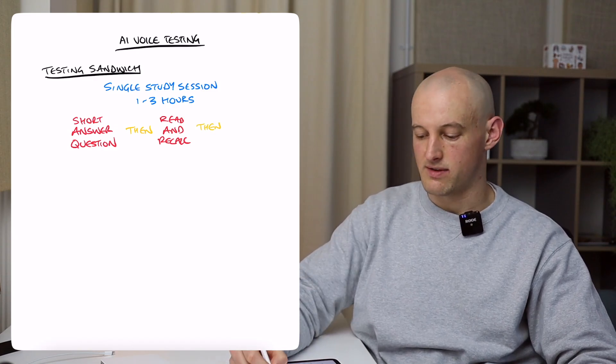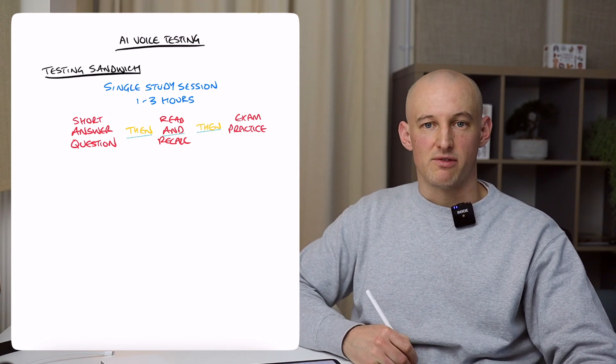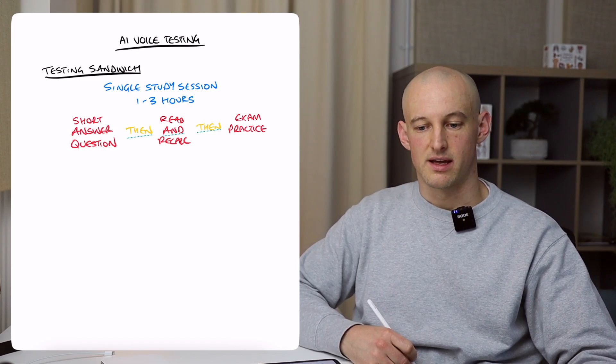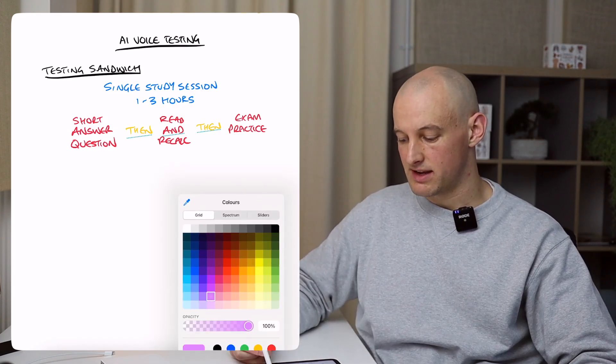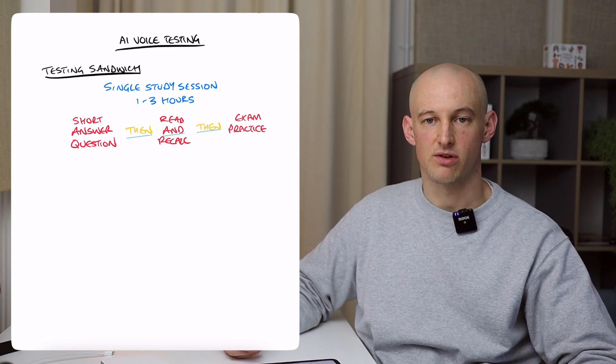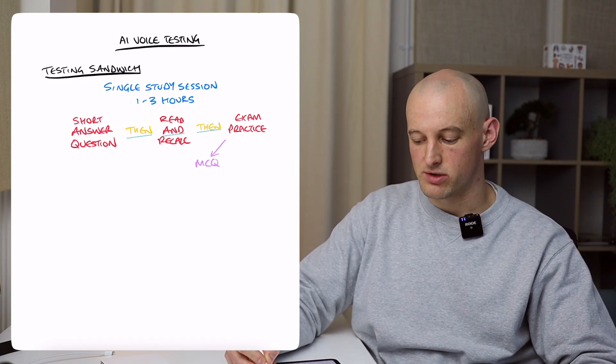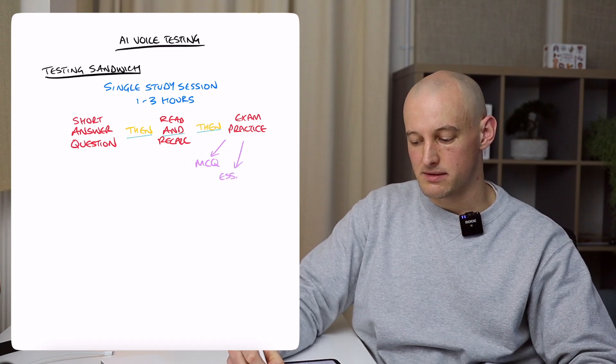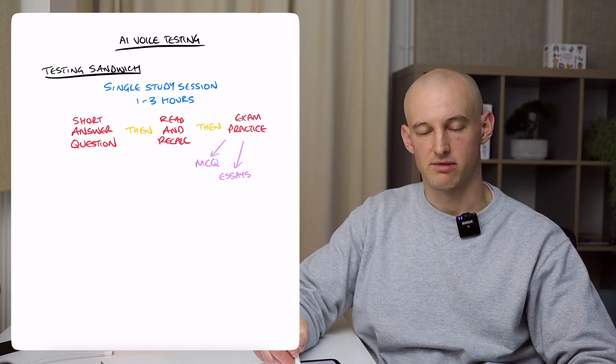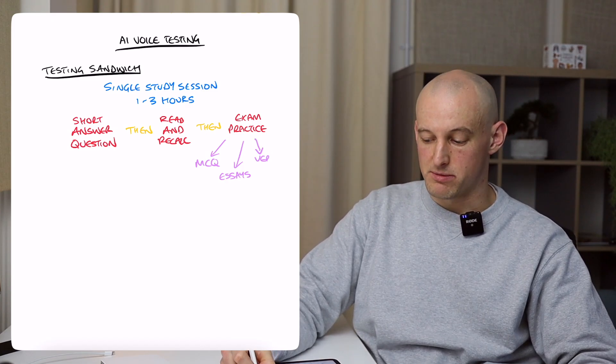Then you do some kind of exam practice. So this might be an interview or a PhD thesis defense or whatever kind of testing scenario that you're going to be presented with. You want to practice that scenario. Often this is doing multiple choice questions. It could be doing essays. So you sit down, you've already done short answer questions on Cushing's, then you do read and recall on Cushing's, then you do an essay on Cushing's, or it could be some kind of verbal test.